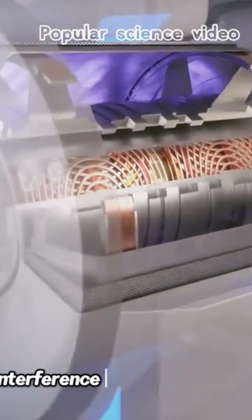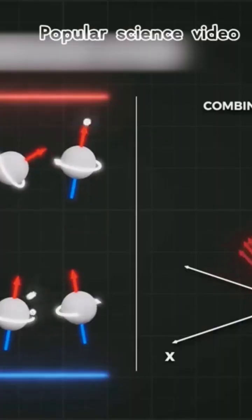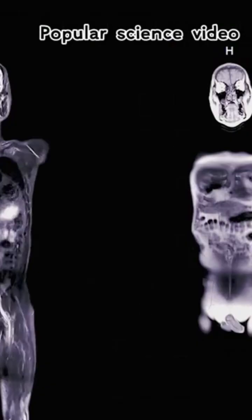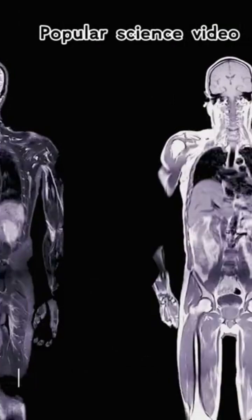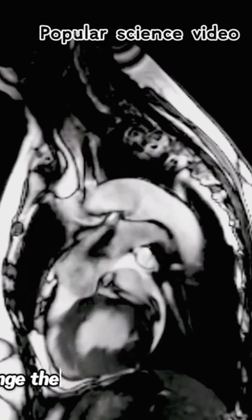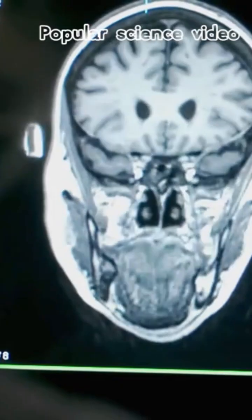Under the interference of the strong magnetic field, all begin to align and move in the same direction. Different tissues have different water contents. Diseased tissues will also change the water content of the area. The resulting signal can be...